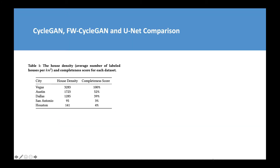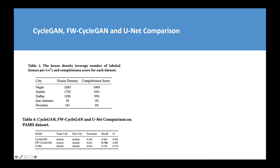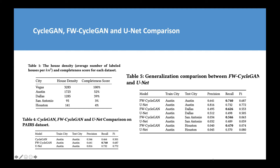We studied four cities in Texas: Austin, Dallas, which have relatively more houses labeled, while San Antonio and Houston have very limited house labels. Using Austin data, we showed that the feature-weighted CycleGAN significantly improved the performance of the base CycleGAN.